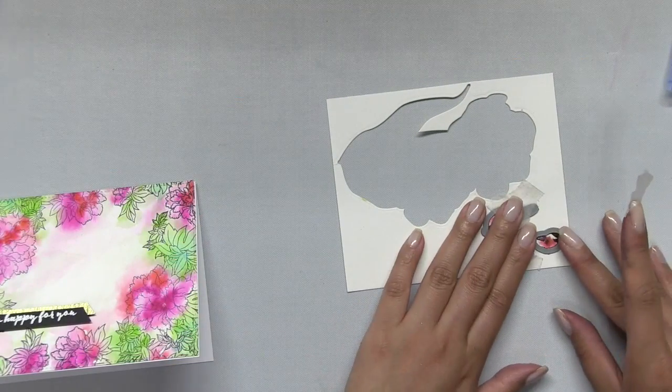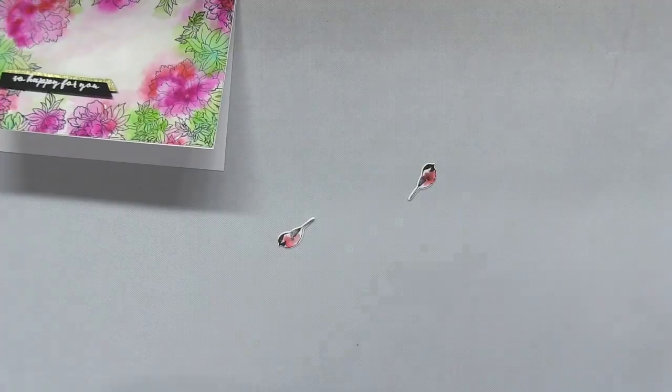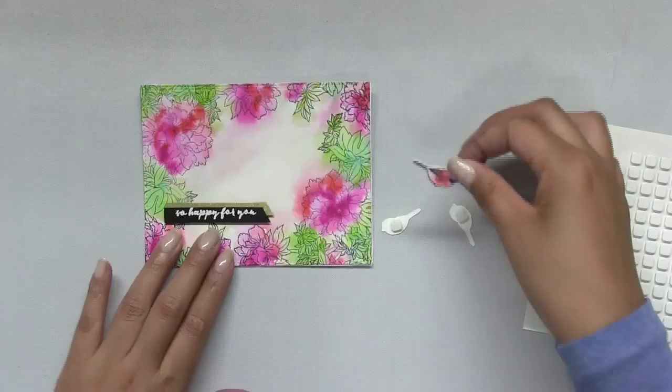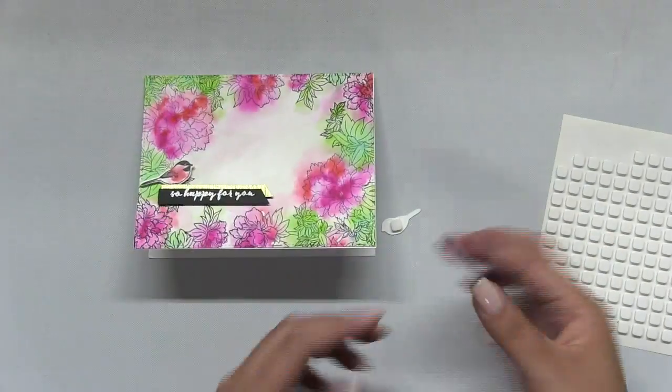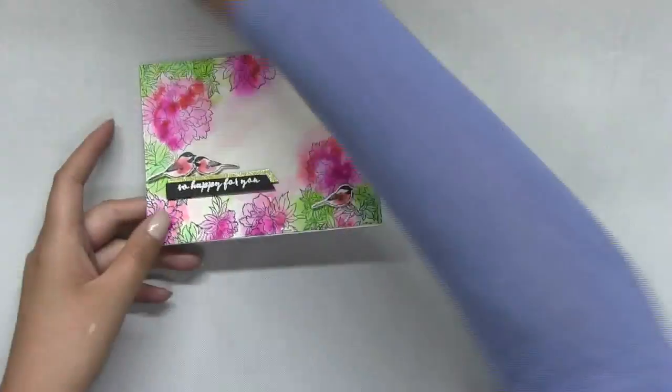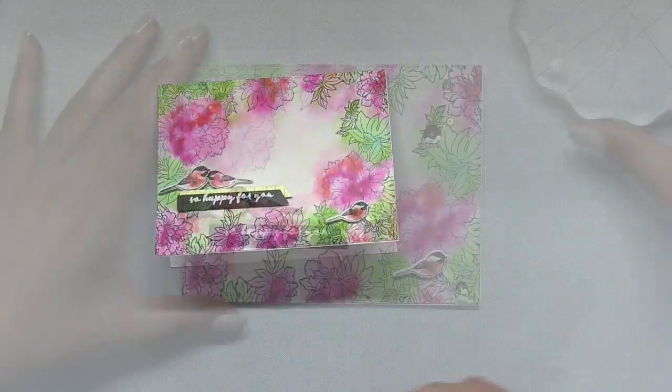Once I finished painting my chickadees, I dried them and then I die cut the three birds using the coordinating dies. Next I mounted the chickadees using foam squares onto my card, and I just had two kind of nestled together and then one off to the side.